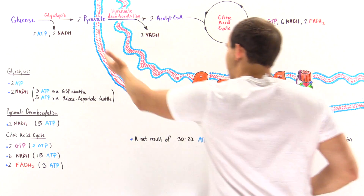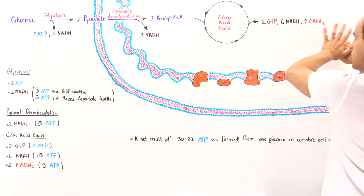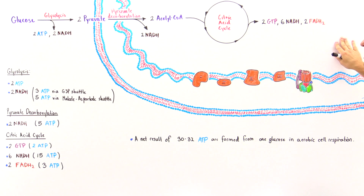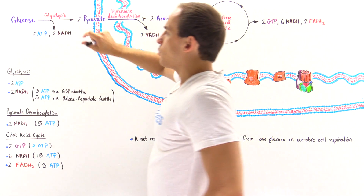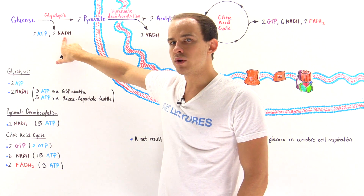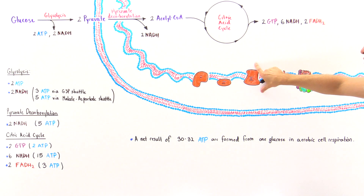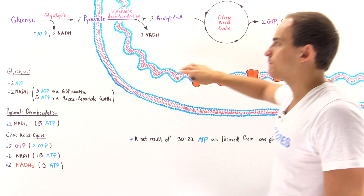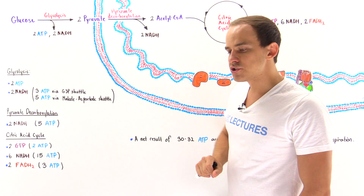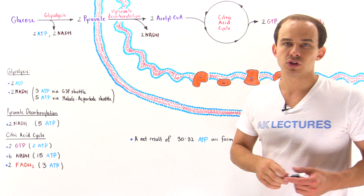The mitochondrion has an outer membrane, an inner membrane with the electron transport chain, a matrix, and an intermembrane space. The question is: how many ATP molecules do we actually form when a single NADH is transported onto the electron transport chain from the cytoplasm? The answer depends on the type of shuttle that the cell actually uses.